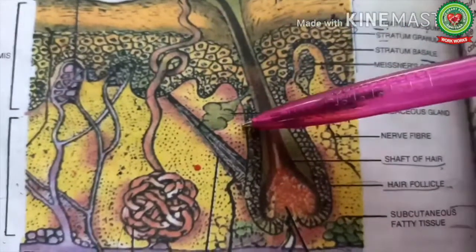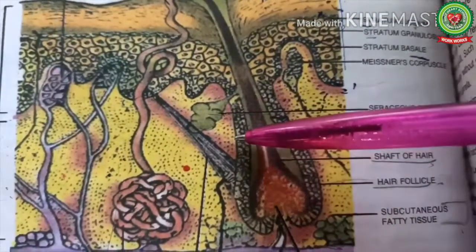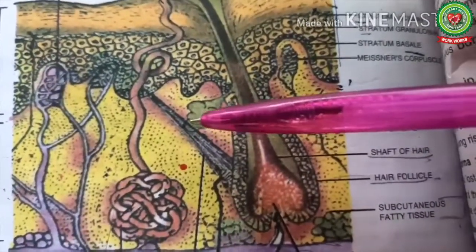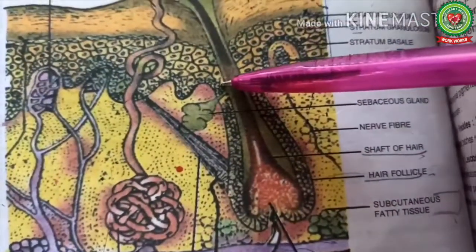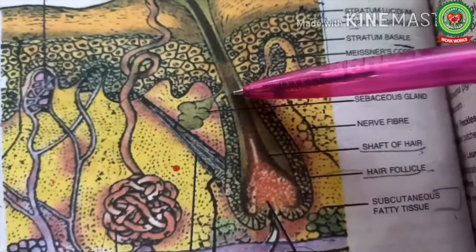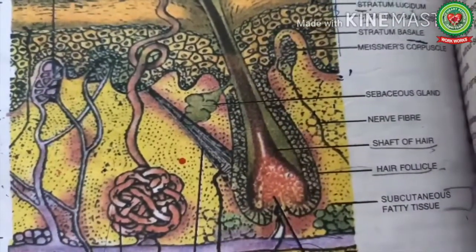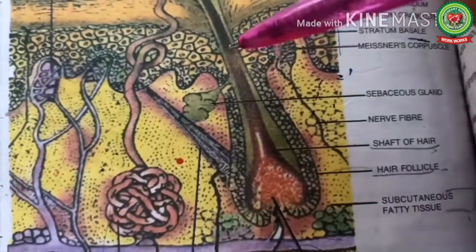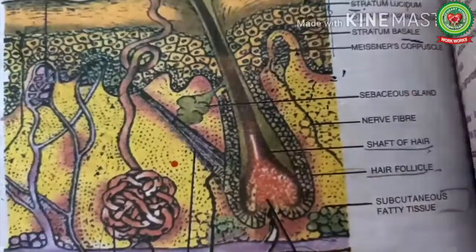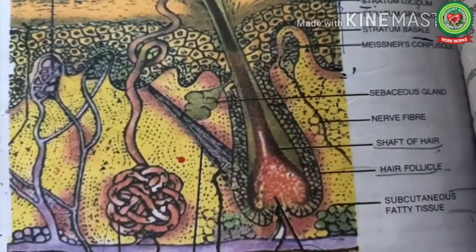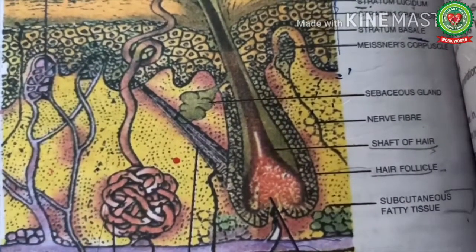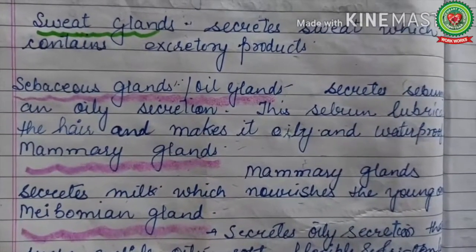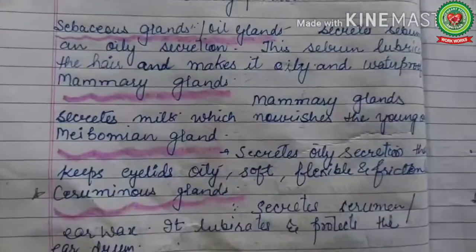Sebaceous glands are lobulated glands containing many sacs that open into the hair follicle by a common duct. They are formed as an outgrowth of hair follicles. The glandular epithelium secretes an oily secretion called sebum, which lubricates the hair and makes it oily and waterproof.